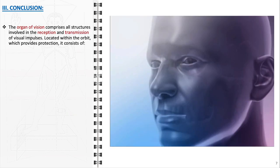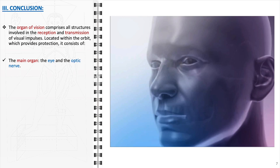To summarize, the organ of vision encompasses all structures involved in the reception and transmission of visual impulses. Located within the orbit, a bony cavity that offers protection and support, it consists of the following components: the main organ, this includes the eye itself and the optic nerve. The eye captures light and translates it into electrical signals, while the optic nerve transmits these signals for visual processing.